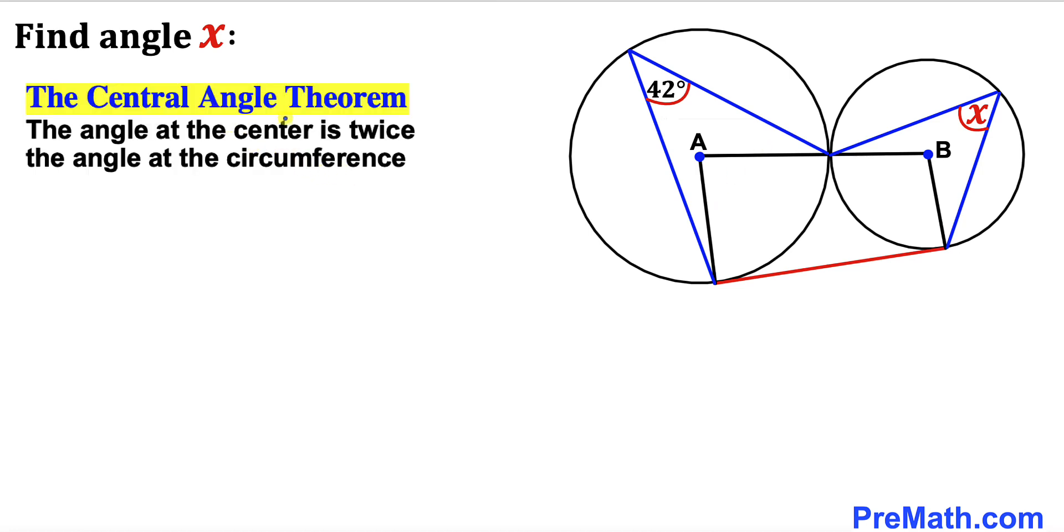Let's recall the Central Angle Theorem. According to this theorem, the angle at the center is twice the angle at the circumference. Let's focus on this big circle—this is our angle at the center and this is our angle at the circumference.